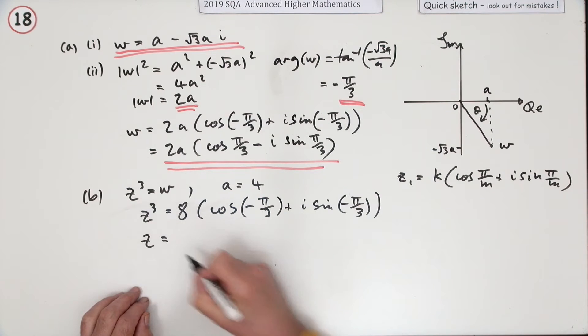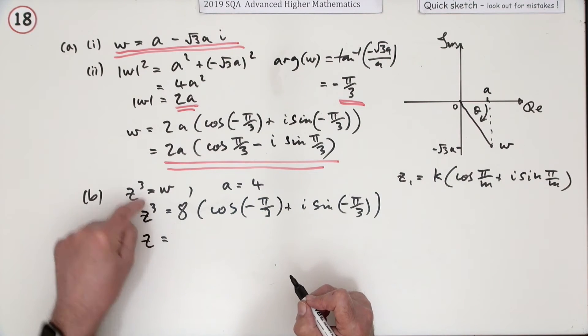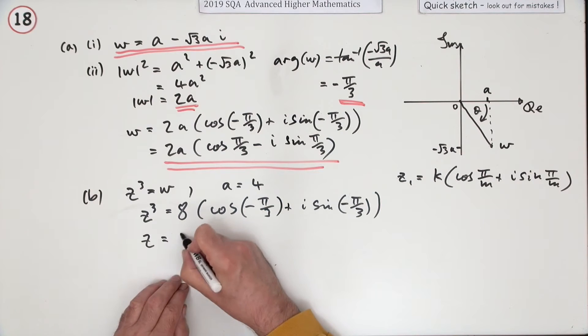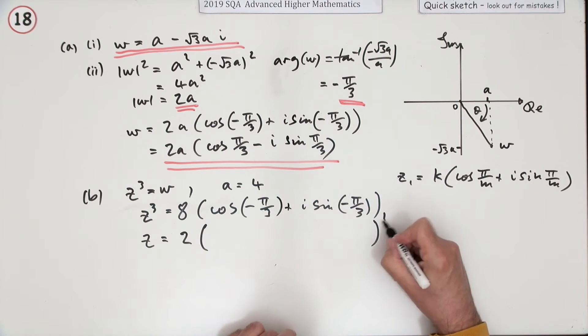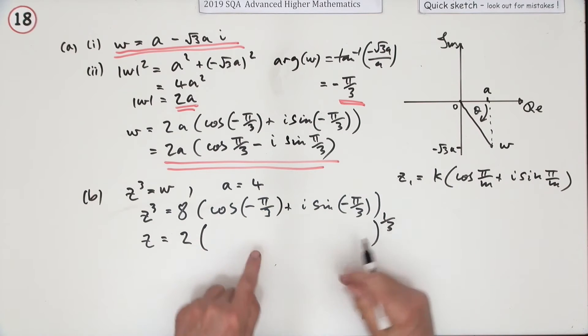Now De Moivre's would just be: get rid of the cube, so it's the cube root of this side. The cube root of 8 is 2, and then the cube root of this I'm going to leave that outside just now because it'll take some tampering with. I'm not just going to divide it by 3 to make a 9 underneath, because that would only give me this first one.